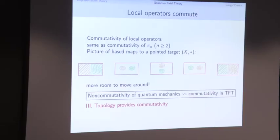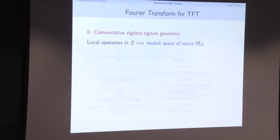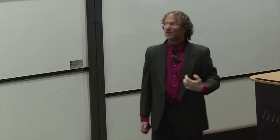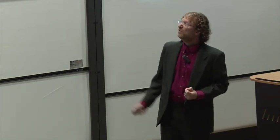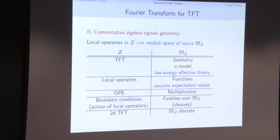We have a commutative algebra of operators — and we know what we're supposed to do with that. Our second theme says: when you see a commutative algebra, look for a space. That means there's a space hiding where this algebra realizes functions. In physics, this space is called the moduli space of vacua of the quantum field theory. I started with a topological field theory; I construct a space out of it where, by definition, the functions are local operators. So we get a version of the Fourier transform in the physics setting: a topological field theory translates into geometry — we build a moduli space.